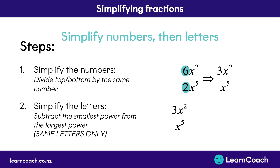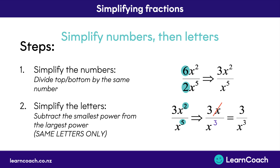Now we move on to step 2. When simplifying the letters, we want to subtract the little power from the big power. Here we have 5 on the bottom as the big power, and we subtract the top power of 2, which is smaller. That means we cancel out all the letters on the top, and then we do 5 minus 2 as the power on the bottom. 5 minus 2 equals 3, so that gives us x to the power of 3 on the bottom. We can write the whole thing out as 3 divided by x to the power of 3, and that would be our answer.